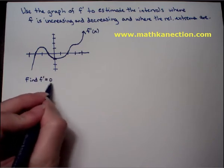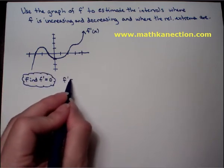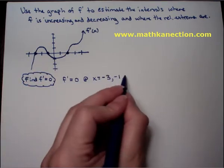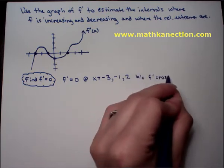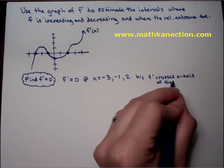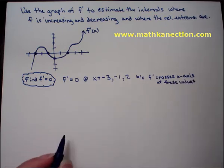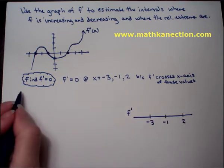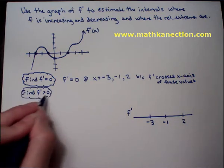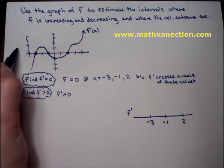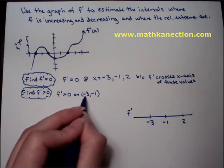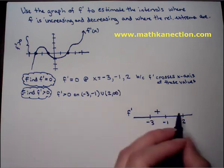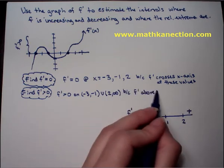Given the graph of f prime, we determine where f is increasing, decreasing, or has extrema. Looking at where f prime equals 0 on the x-axis, f prime = 0 at x = -3, -1, and 2, because that's where f prime crosses the x-axis. Making an f prime number line with critical numbers -3, -1, and 2: f prime is greater than 0 on (-3, -1) ∪ (2, ∞), because f prime is above the x-axis.